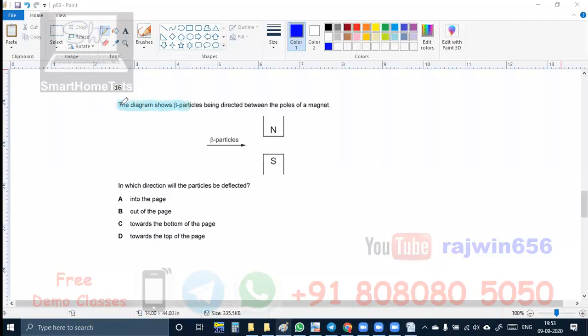Question number 16. Here in the diagram shows beta particles being directed between the poles of a magnet. Beta particles are going from right to left. The magnetic field that is there is north pole to south pole that is up to down. What we are supposed to determine is in which direction will the particles be deflected. We are having beta particles over here. Now one thing you should remember over here, the magnetic field is from up to down. Beta particles will never get attracted either towards north pole or towards south pole. So these both answers are not possible.